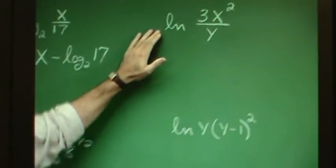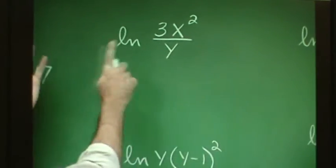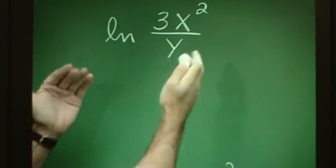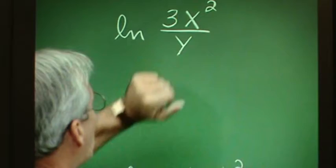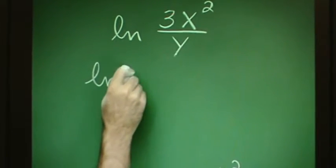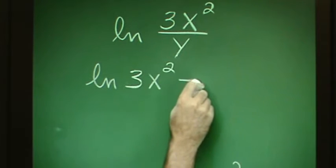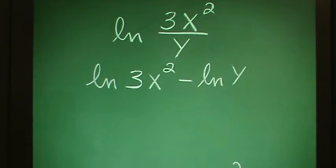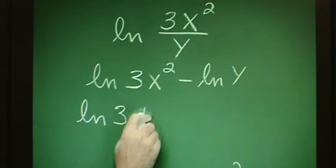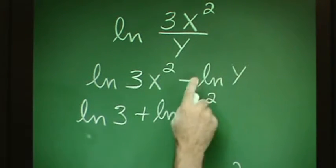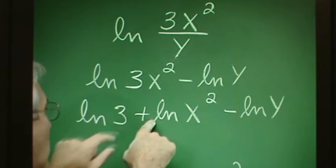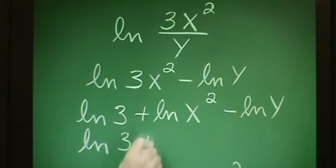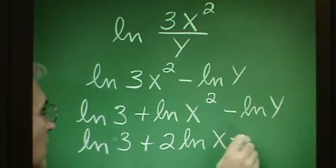In this problem we have the natural log of a quotient. The base of the logarithm makes no difference in these properties, so we apply them universally. The natural log of a quotient equals the natural log of the numerator minus the natural log of the denominator. Now we have the logarithm of a product, so this becomes ln 3 plus ln x squared, then minus ln y. Using the power property, 2 becomes the coefficient, giving ln 3 plus 2 ln x minus ln y.